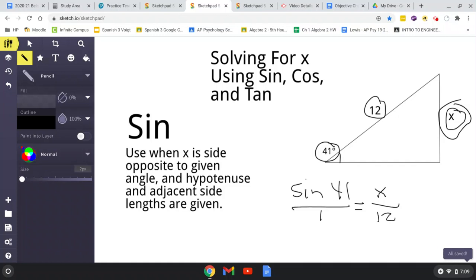Same thing as the other problem. Multiply by 12. Multiply by 12. So, to solve for x, you're going to get 12 times the sine of 41. Now, plug it into your calculator. 12 times sine of 41.